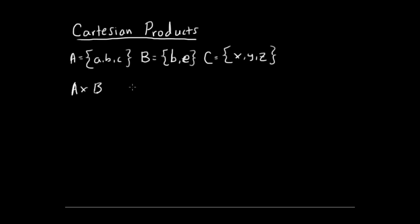If that confused you a little don't worry I'm about to show you how to do it. So the cross product of A times B is going to be AB and then you're going to put that in ordered pair and then AE and then BB and BE and then you're done. That's the Cartesian product of A times B.